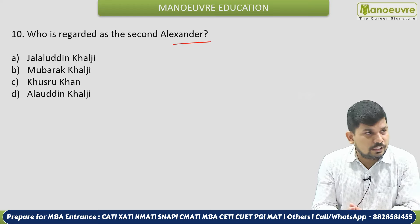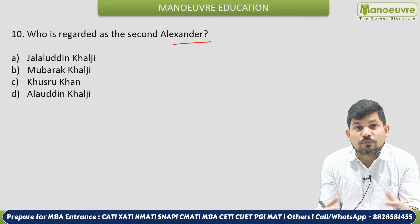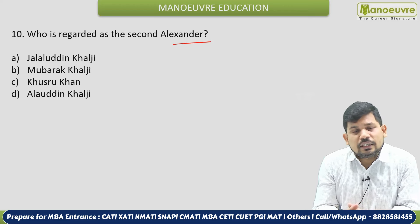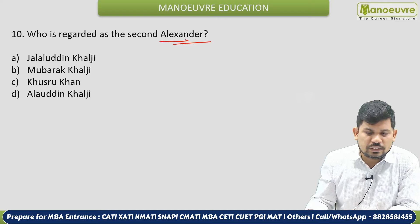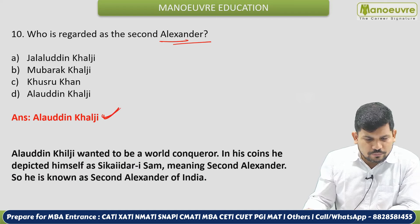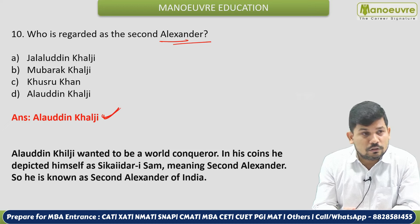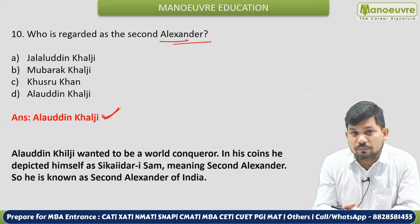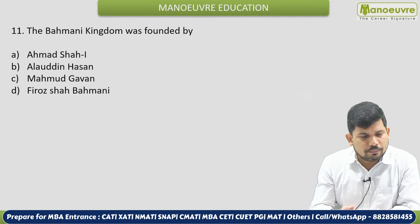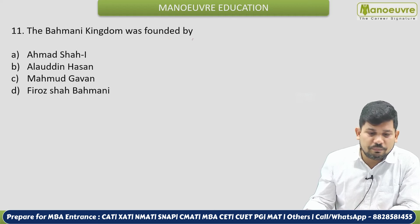Next: Who is regarded as the Second Alexander? This question could also be asked as: What is the name of the sultan who assumed the title of Sikandar-e-Sani? The correct answer is Alauddin Khilji. Remember Alauddin Khilji's name — he is also very famous for his market reforms.